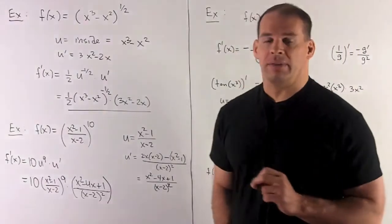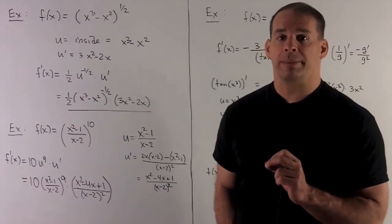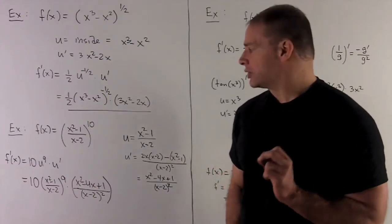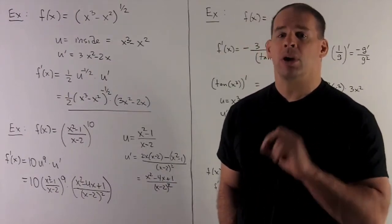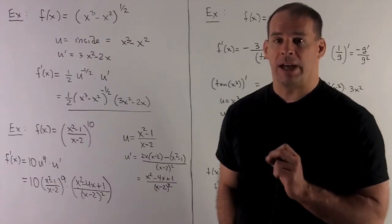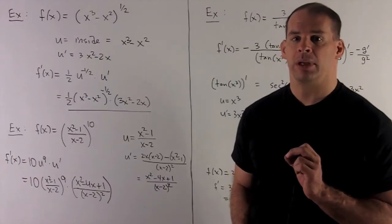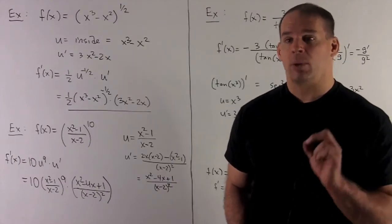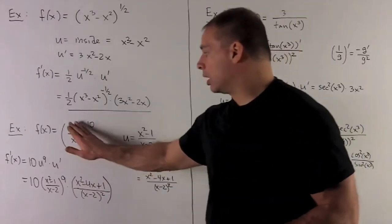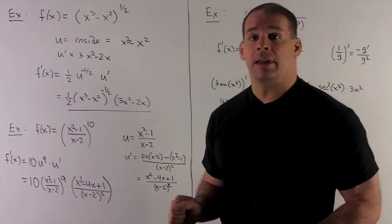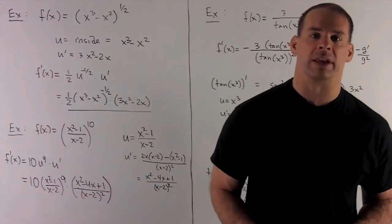Now we want the derivative of u to the tenth power. I bring the ten down, subtract one off the exponent, and put u back in: 10 times x squared minus 1 over x minus 2, quantity raised to the ninth power. Then multiply by u prime from the quotient rule. If you're nimble, it's just cover up the inside, 10 times whatever to the ninth power, uncover the inside, then multiply by the derivative of the inside. For this one, you'll have to do some work to get the derivative of the inside anyway.